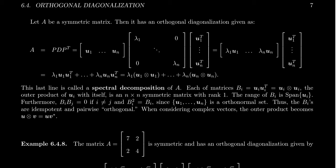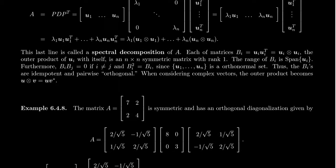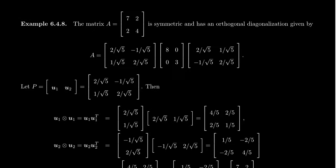This is the discussion for symmetric matrices. Of course, if you're considering complex vectors and have a Hermitian matrix, then the outer product U tensor V will be U V^*, so change the transposes into conjugate transposes when working with complex vectors. The spectral decomposition is similar. Let's look at an example of this spectral decomposition. We'll just take this two-by-two symmetric matrix: 7, 2, 2, 4.